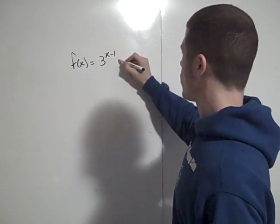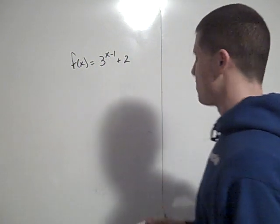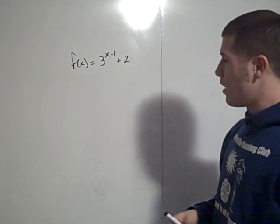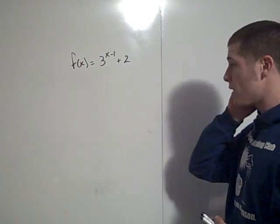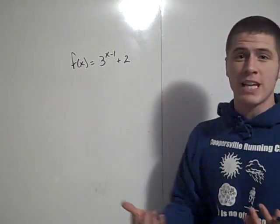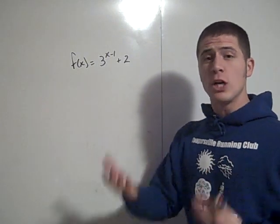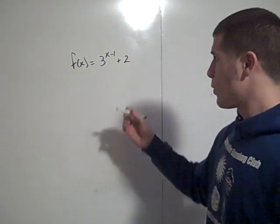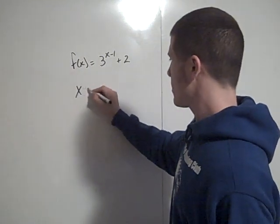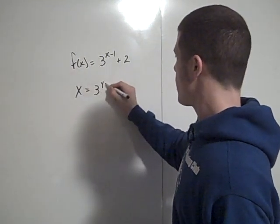So here you have y equals 3 to the x minus 1 plus 2. To find the inverse of any function, you switch the x and the y. So do that first: you have x equals 3 to the y minus 1 plus 2.